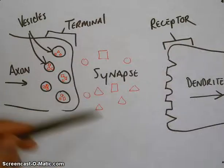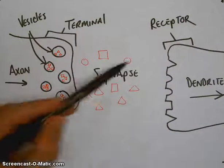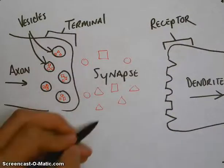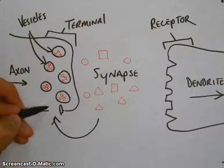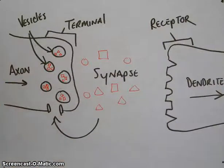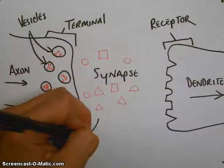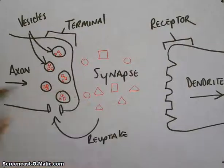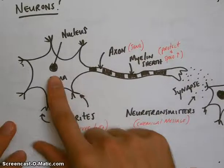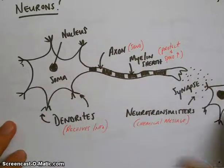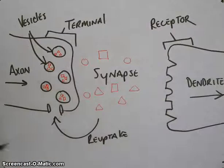And then any neurotransmitters that aren't being used, they're going to get sucked back in through a process that we call reuptake. Now this whole process, the whole process of information being sent from one neuron to the next is what we call neurotransmission.